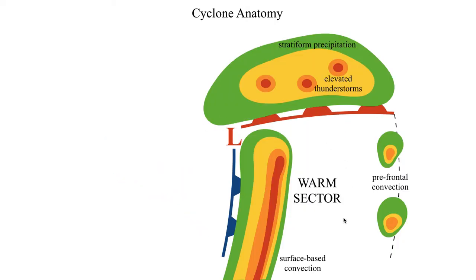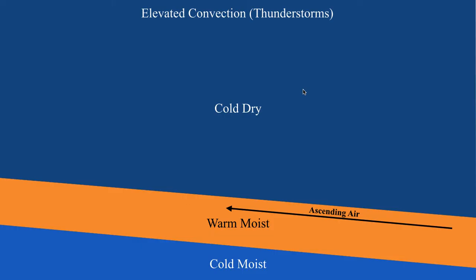So that's what we mean by elevated versus surface-based convection. Going back to the diagram, typically where you have warm, moist air at ground level, that's where you'll have surface-based and more intense convection. A lot of times the cold front will kick up a squall line, but if it's weak enough, it may not be a solid line. North of the warm front is typically where you get showers and possibly elevated thunderstorms that can be strong to severe. That's going to do it for this segment on the horizontal anatomy of a cyclone. In the next segment, we'll talk about the vertical anatomy and how it relates to what you might see on a 500 millibar map.